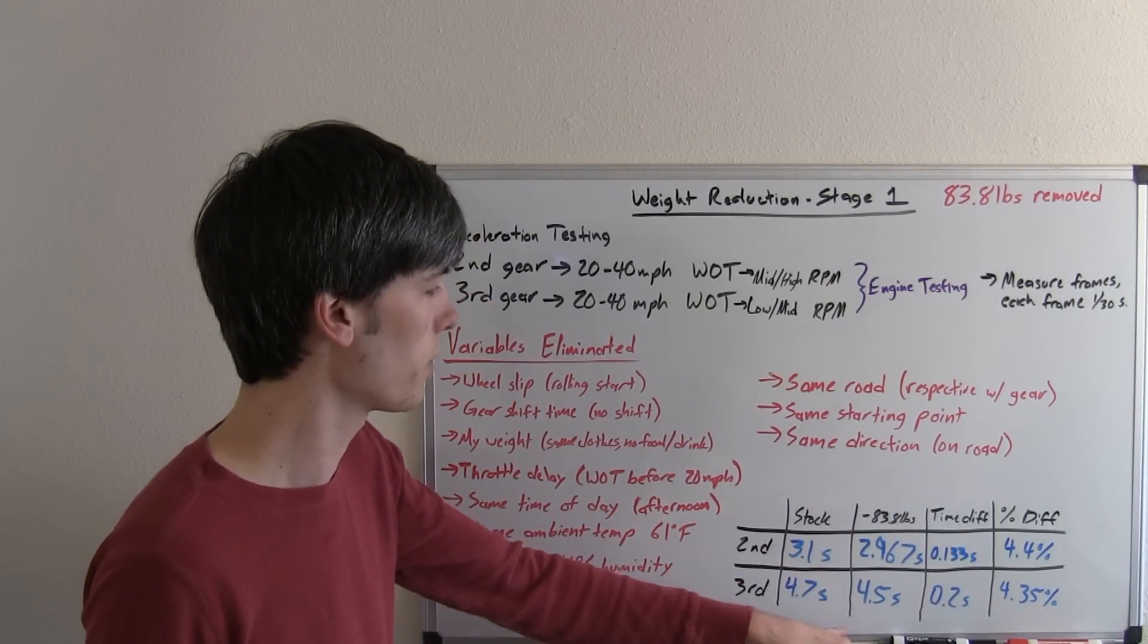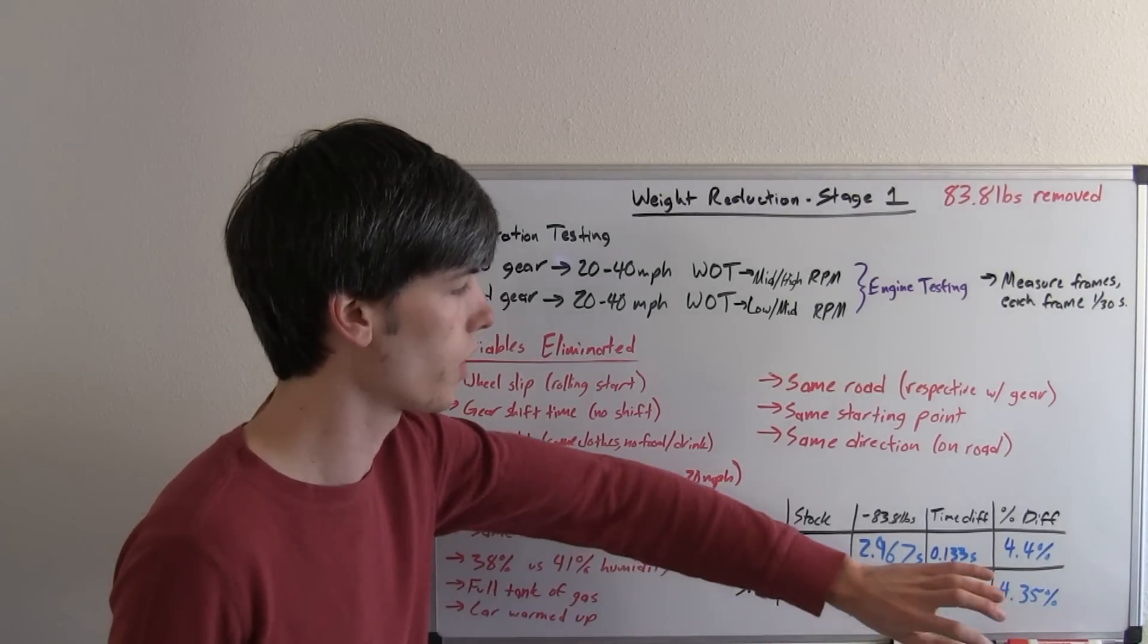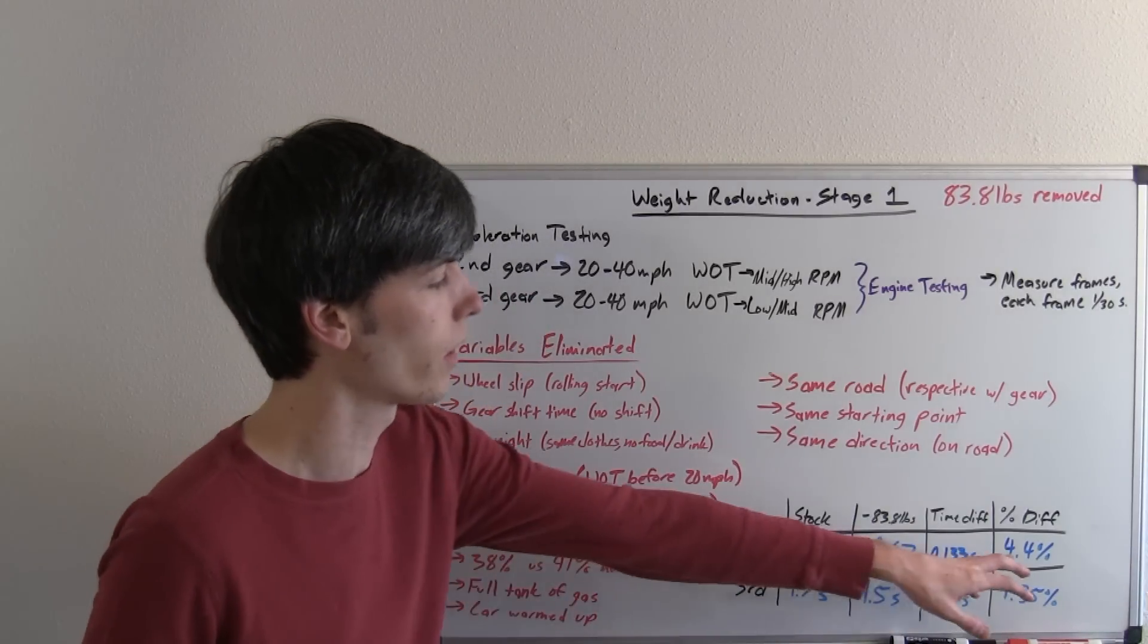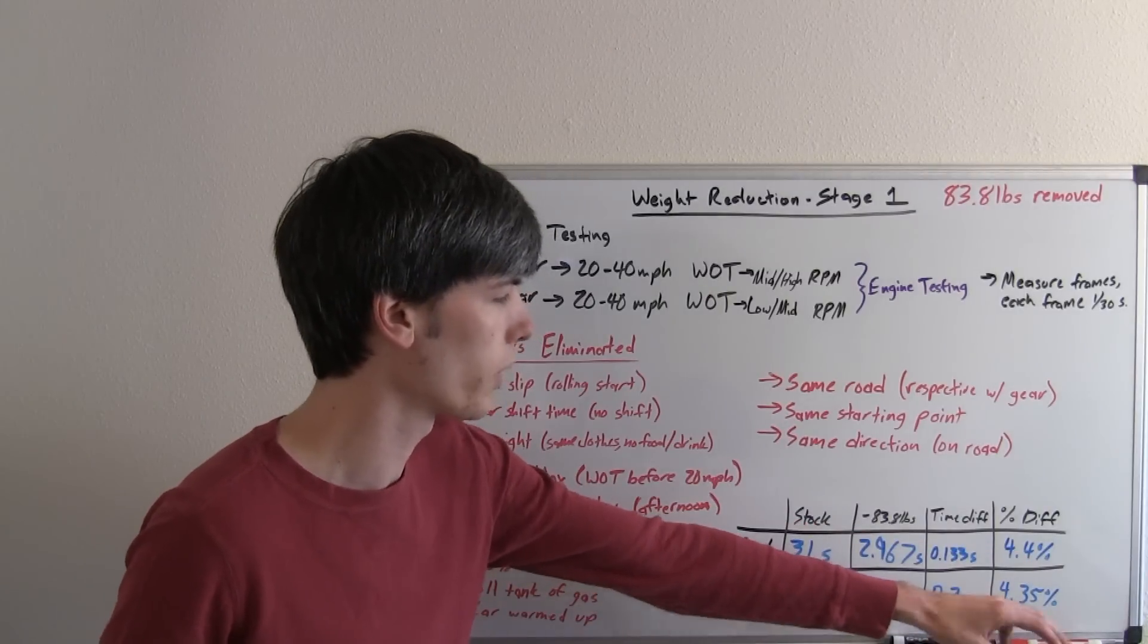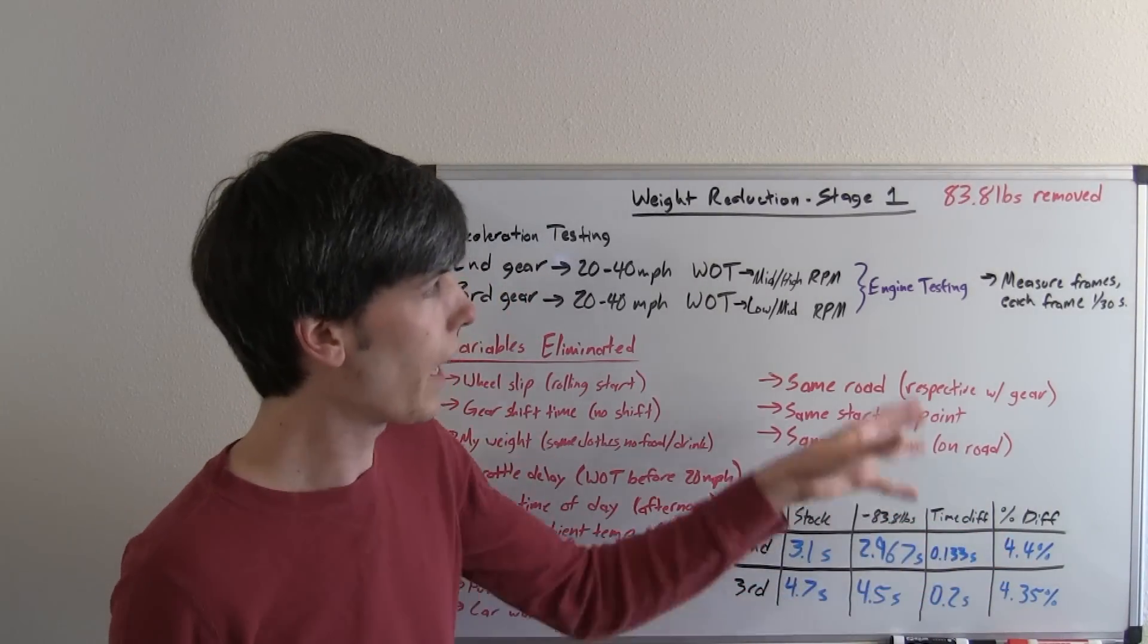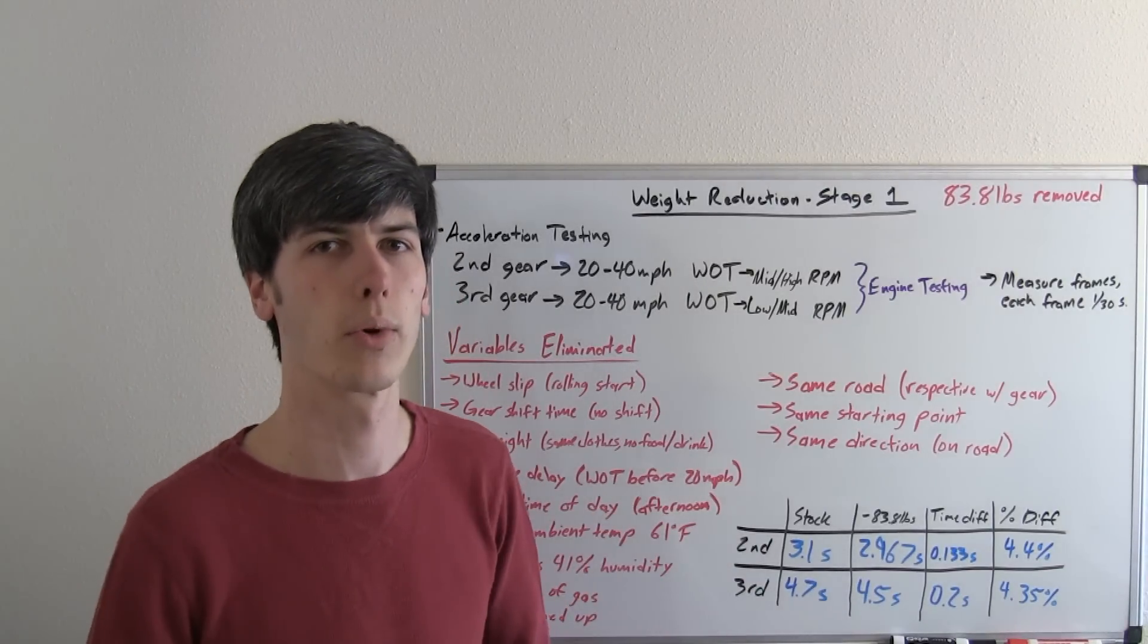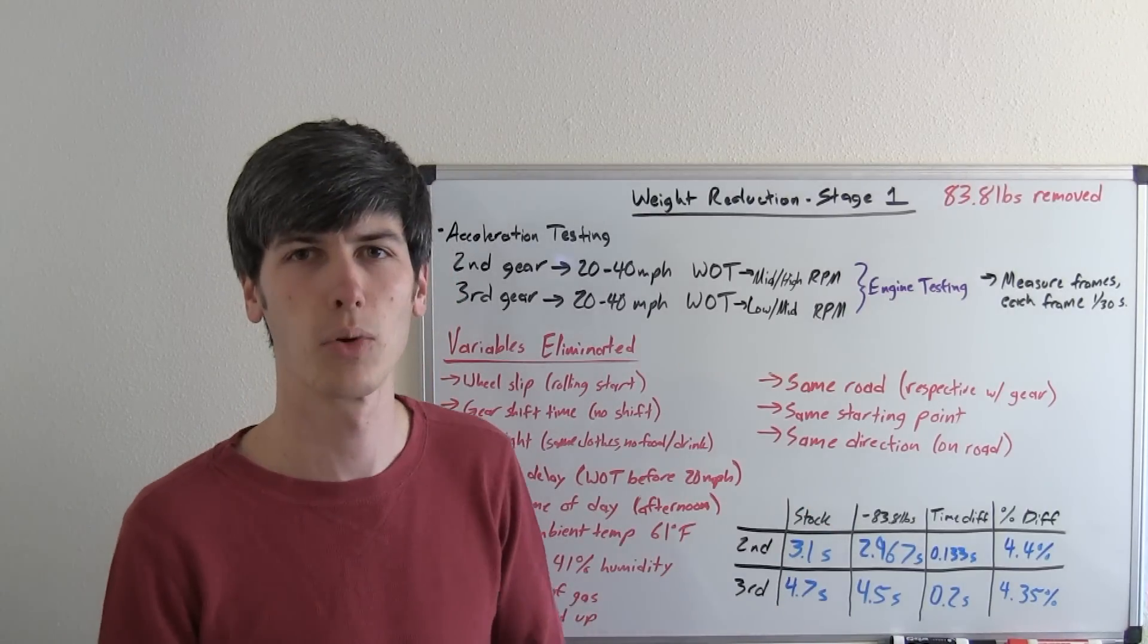For our third gear, the time difference between the stock versus the weight removed, 0.2 seconds, so pretty good. And a percent difference between the time of after removing weight versus before removing weight, 4.4% for the second gear pulls, and 4.35% for the third gear pulls. So basically what this is saying is, by removing these 84 pounds, I've increased the acceleration of my car by about 4.3 to 4.4%, which is actually pretty significant, so it's very cool to have that and see that as a quantifiable result.